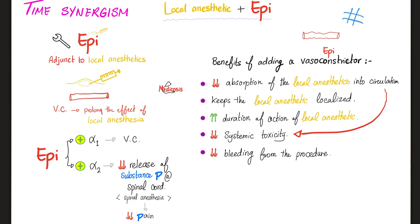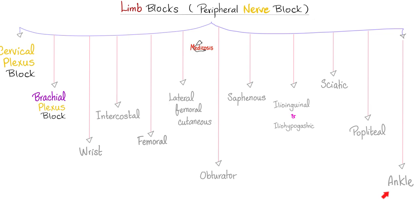So what kind of options do I have? All kinds of options. If you want to block a peripheral nerve, you can block the cervical plexus, the brachial plexus, the wrist, the intercostal nerve, femoral nerve block, lateral femoral cutaneous nerve block, obturator nerve block, saphenous nerve block, ilio-inguinal and ilio-hypogastric blocks, sciatic nerve block - this is important - popliteal block, and even ankle block.